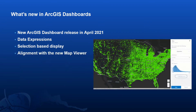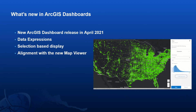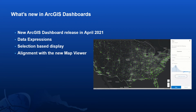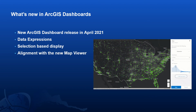ArcGIS dashboards can now take advantage of the new map viewer, which uses the most recent version of the JavaScript API. There'll be another video on the ins and outs of the new map viewer, but features include dot density style smart mapping, improved clustering, layer blending, and group layers.